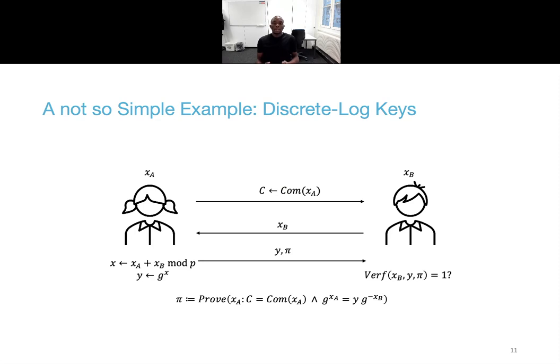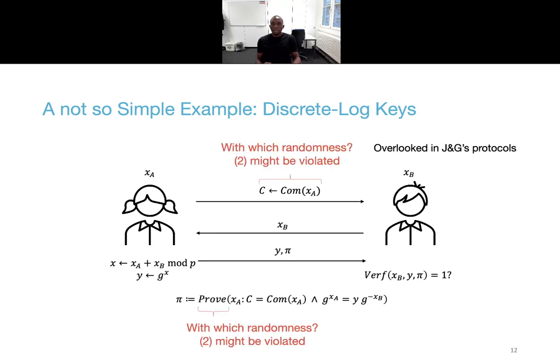Another idea could then be to have Alice first commit to a randomness before Bob sends xB, and then in the proof Alice would also show that the other part of the secret key is what was committed in the first round. But now the problem is that the properties of commitment schemes and zero-knowledge proofs are only guaranteed with perfect randomness. Alice does not have access to it in this more realistic model. This is, by the way, an aspect that was overlooked in Juels and Guajardo's protocols. It then turns out that the case of discrete log keys is actually not as simple as one might expect.